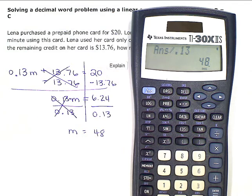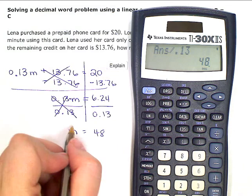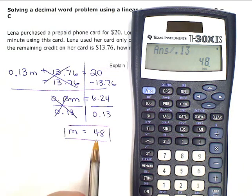So M is equal to 48. Or the one phone call she made lasted 48 minutes.